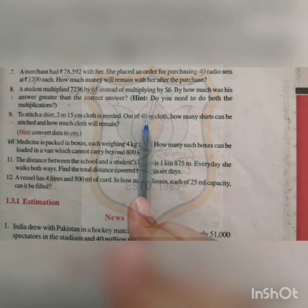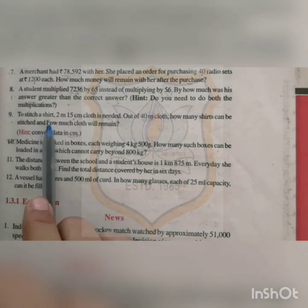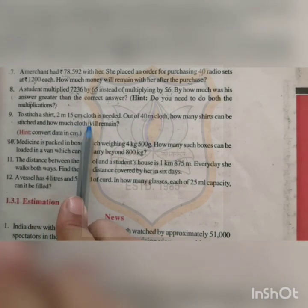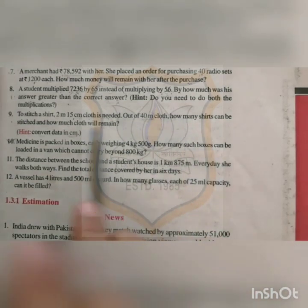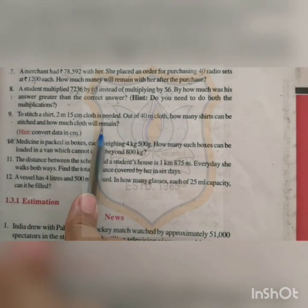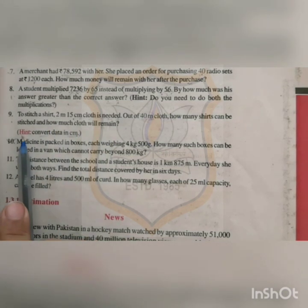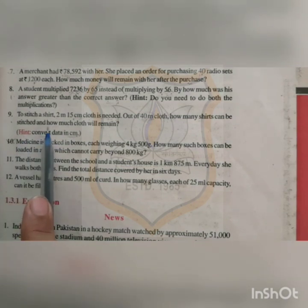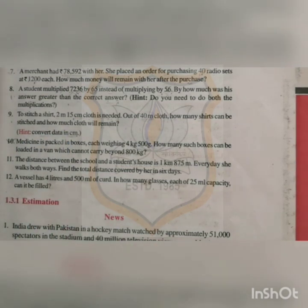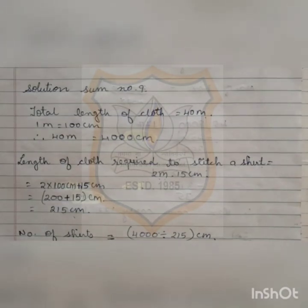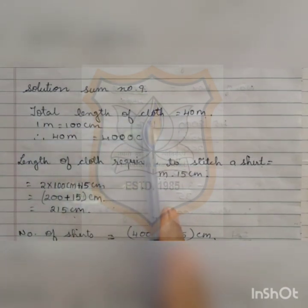In this question, one shirt requires 2 meters 15 centimeters of cloth. The total cloth the person has is 40 meters. We have to find how many shirts can be stitched and how much cloth will remain after stitching. The hint says to convert meters into centimeters. The total length of cloth is 40 meters.